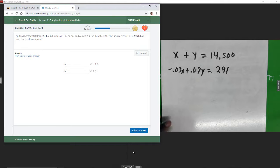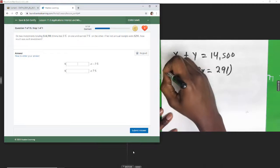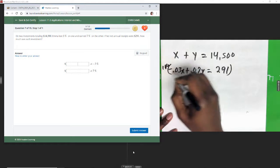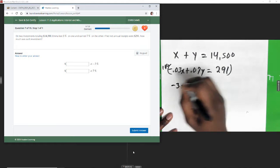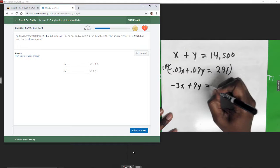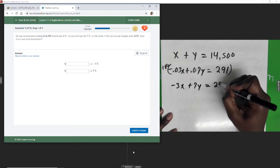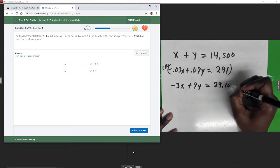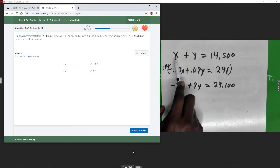Okay, so I'm going to multiply by 100 to get whole numbers. This will give me negative 3x plus 7y, and add two zeros here, so it'll give me 29,100.